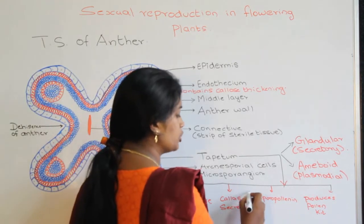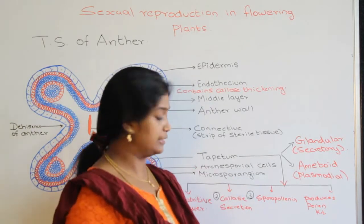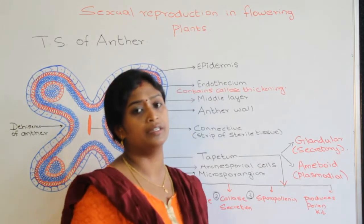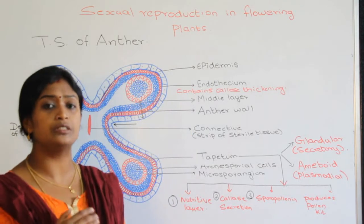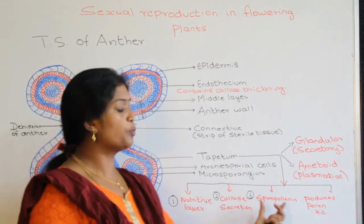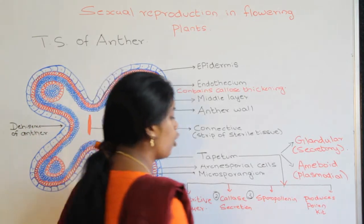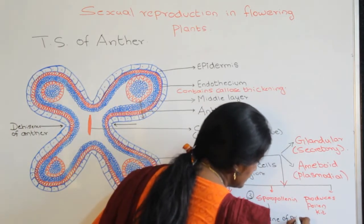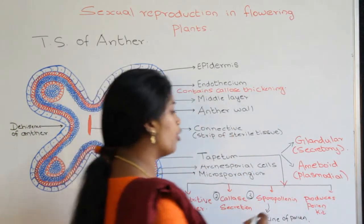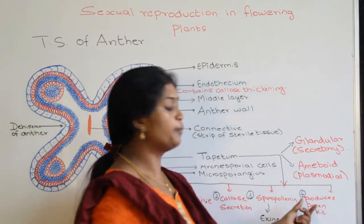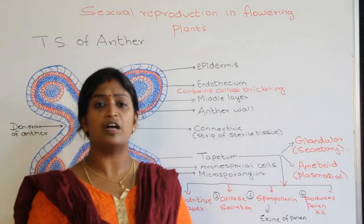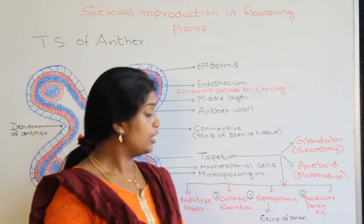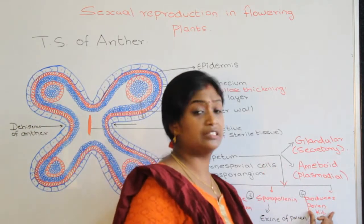The third important function of the tapetum is that it produces a ubisch body called sporopollenin. Sporopollenin is the most resistant substance known to date, and it forms the exine of the pollen. The fourth important function of the tapetum is that it produces pollen kitt. In some flowers we can see a yellow powdery substance when we touch the anther, and this yellow substance is called pollen kitt.